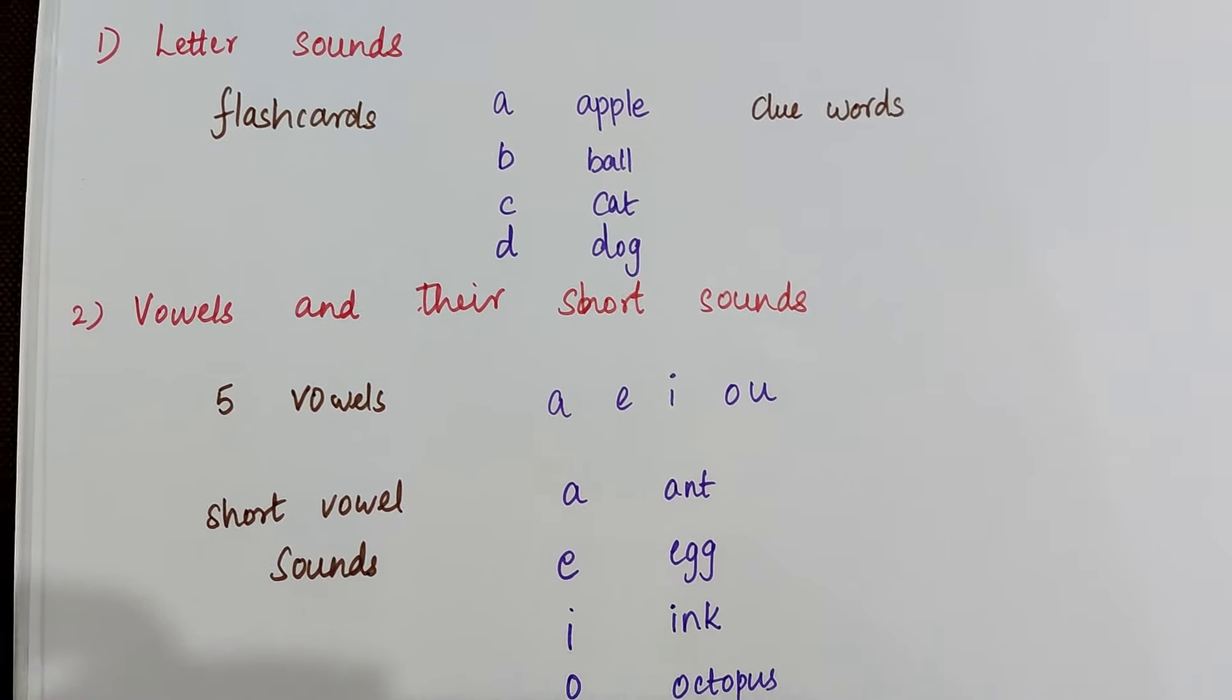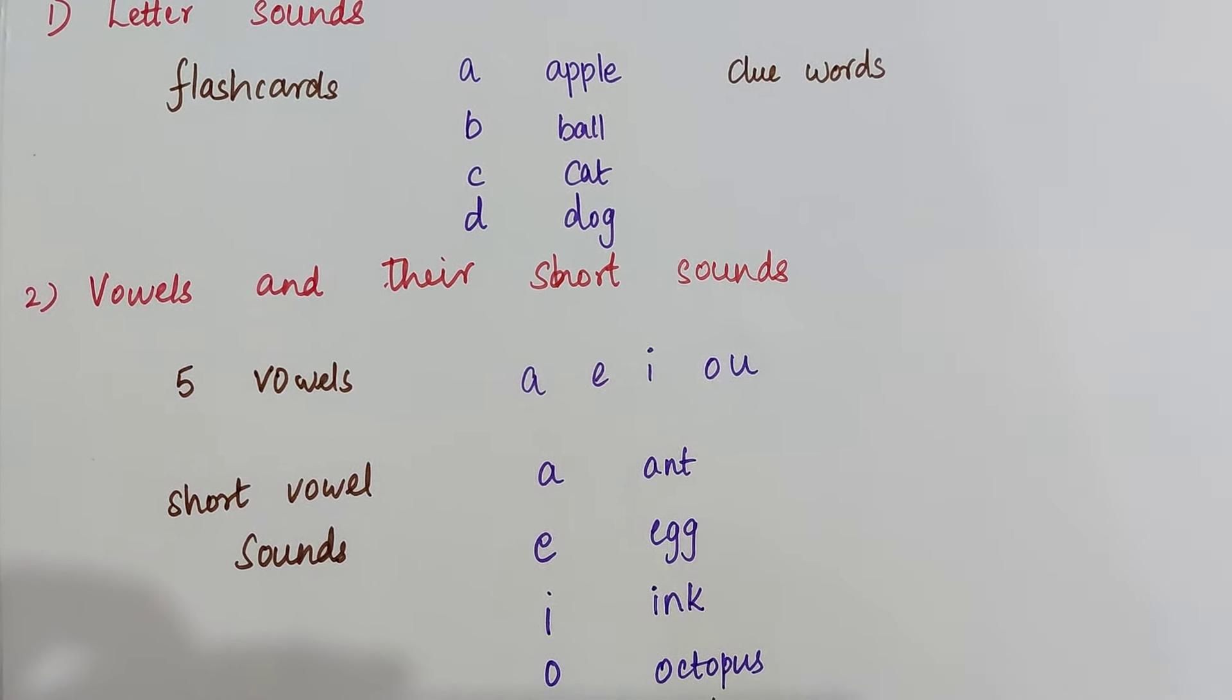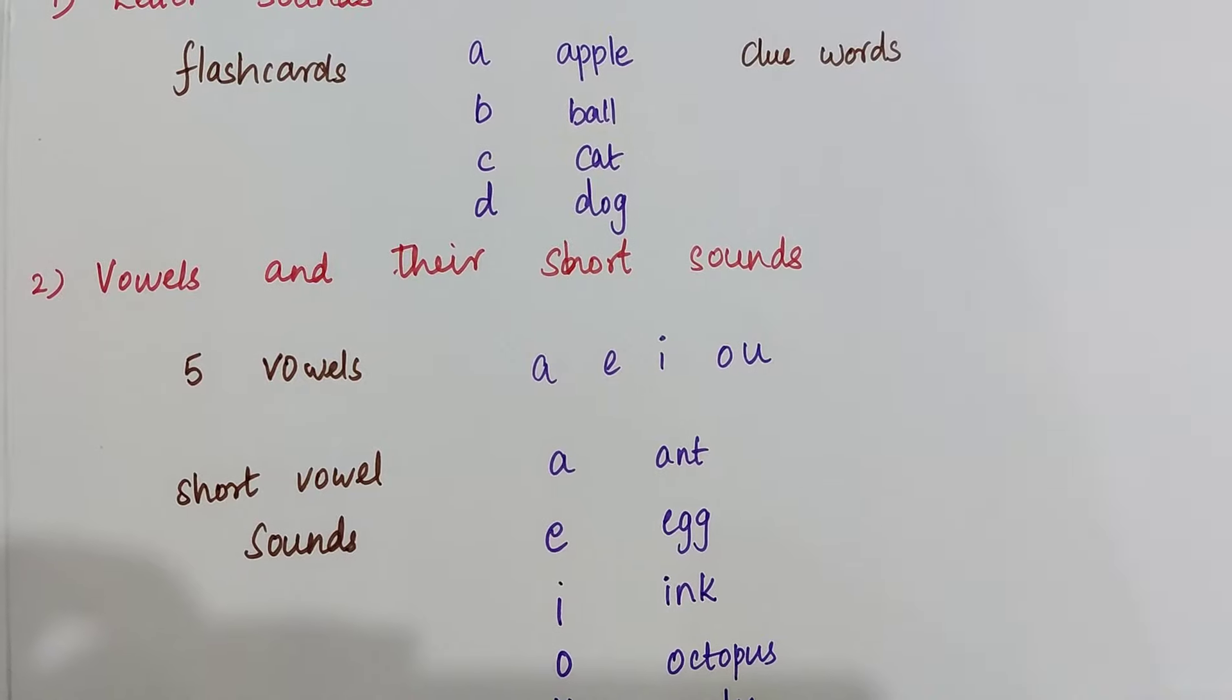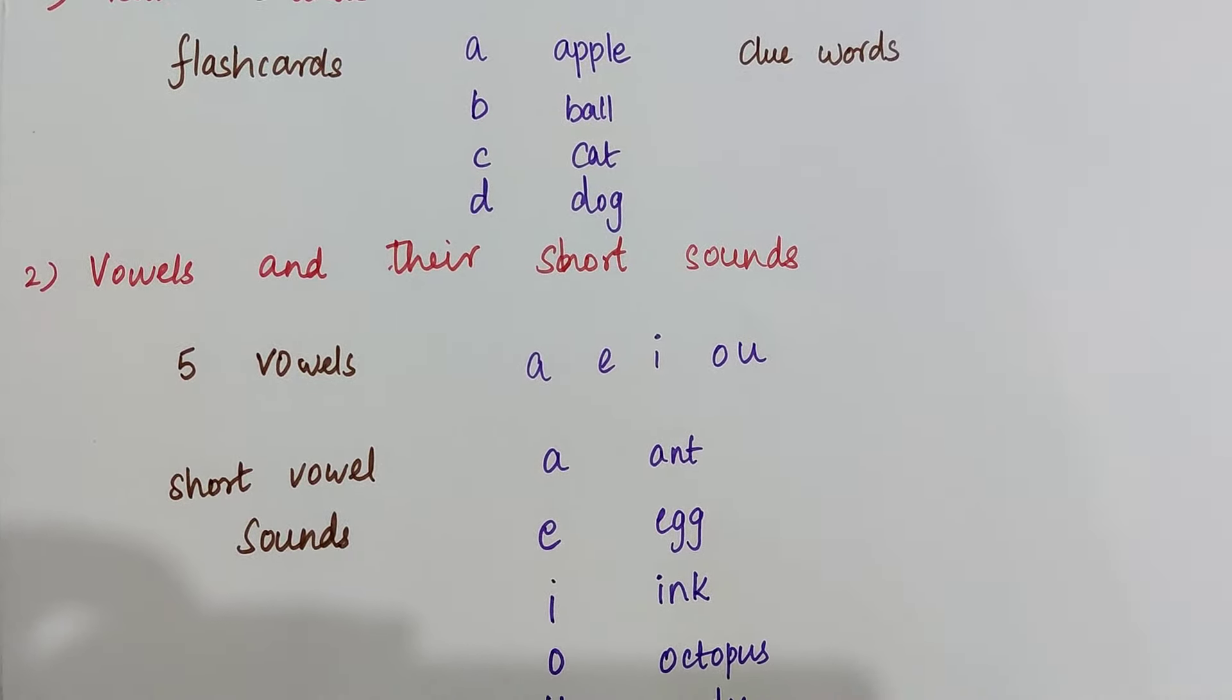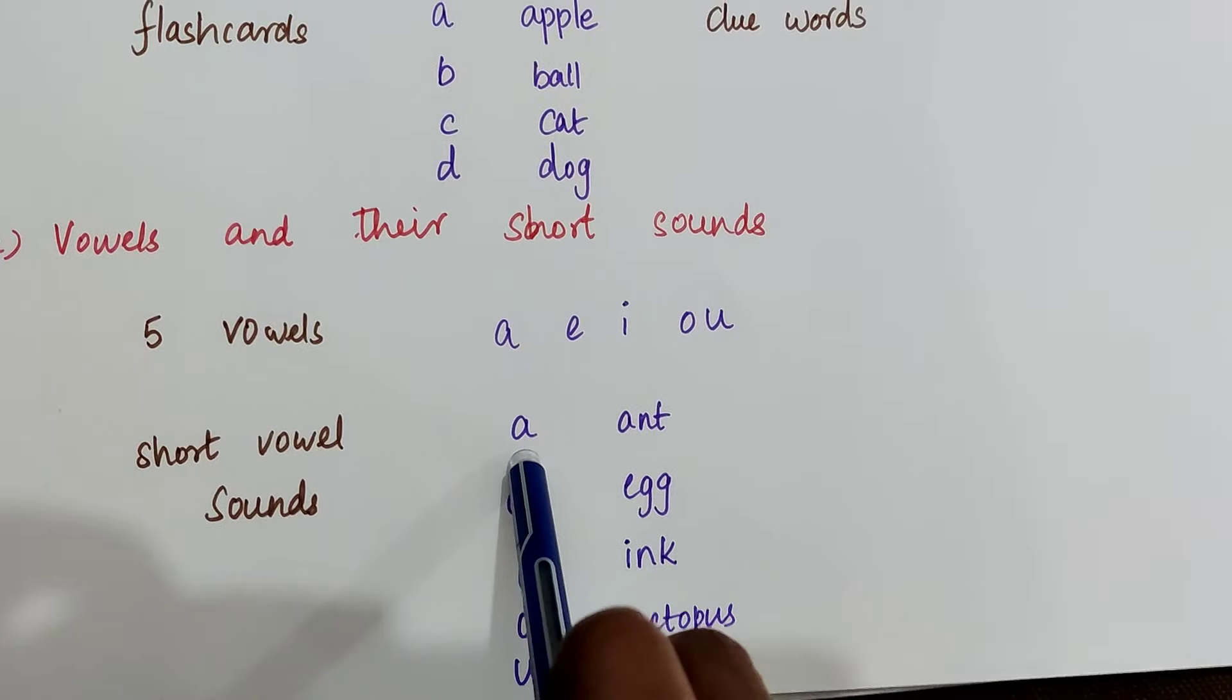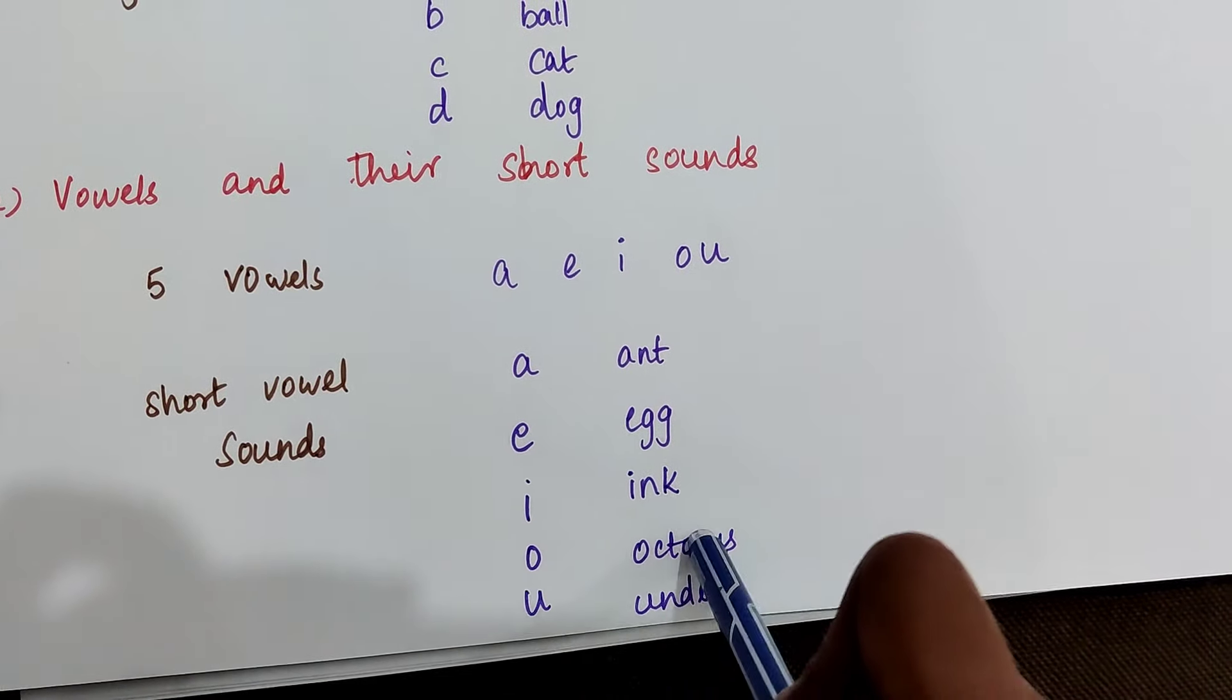Once the child has mastered all the letter sounds, we can move on to the next step which is vowels and their short sounds. So let's see the five vowels. They are a, e, i, o, u. These vowels make either short sounds or long sounds. Let's see the long sounds later. For now we will concentrate only on the short vowels. So the short vowel sounds is a, e, i, o, u.